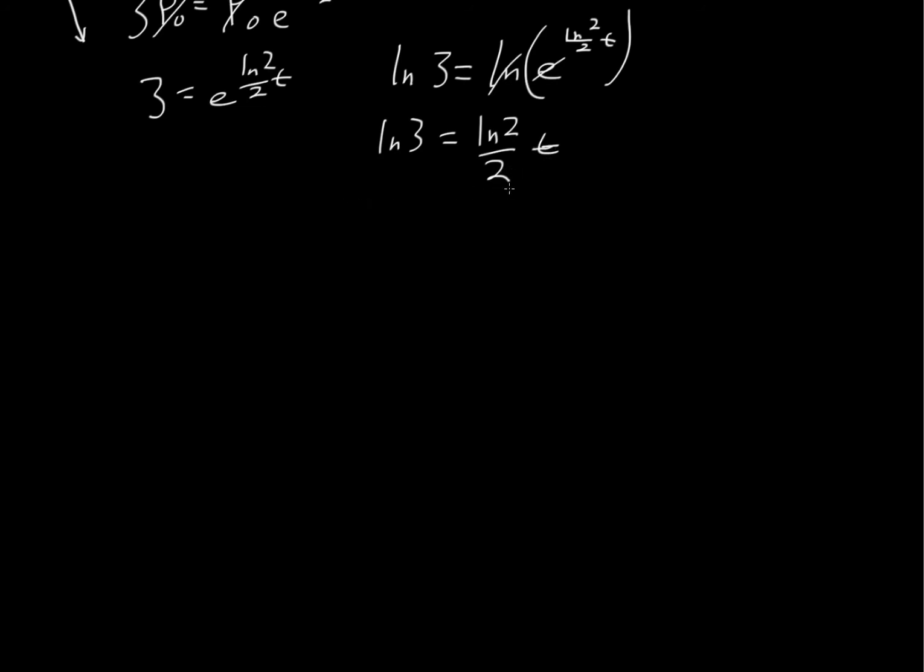Now we can just simply solve for t. So we'll multiply the natural log of 3 by 2, which will get rid of that. So you have 2 natural log of 3 equals t times the natural log of 2. So t, the time for our population to triple, is going to be equal to 2 times the natural log of 3 over the natural log of 2.